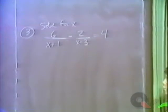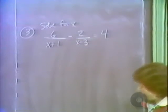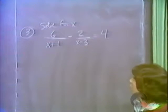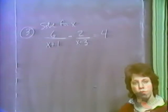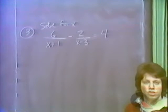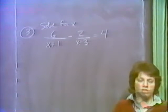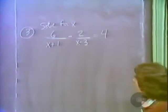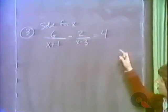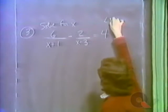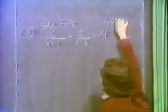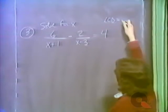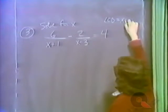Another time you should really do a formal check is when you have an equation involving radicals and you've squared both sides — you can also introduce an extraneous solution in that type of problem. We'll consider one of those a little later on. Back to this problem: the LCD is simply the product of the denominators, x plus 1 times x minus 3.